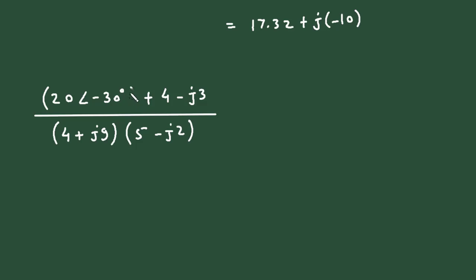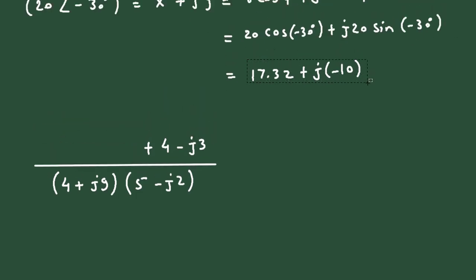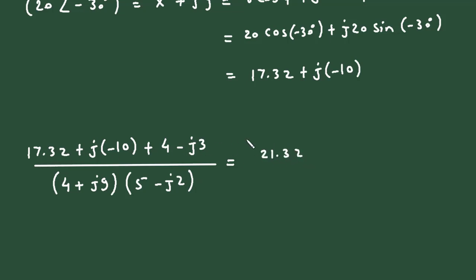Now let us add all the rectangular forms together. The real parts: 17.32 + 4 = 21.32. For the imaginary parts, combining −j10 and −j3 gives −j13. So the numerator is 21.32 + j(−13).